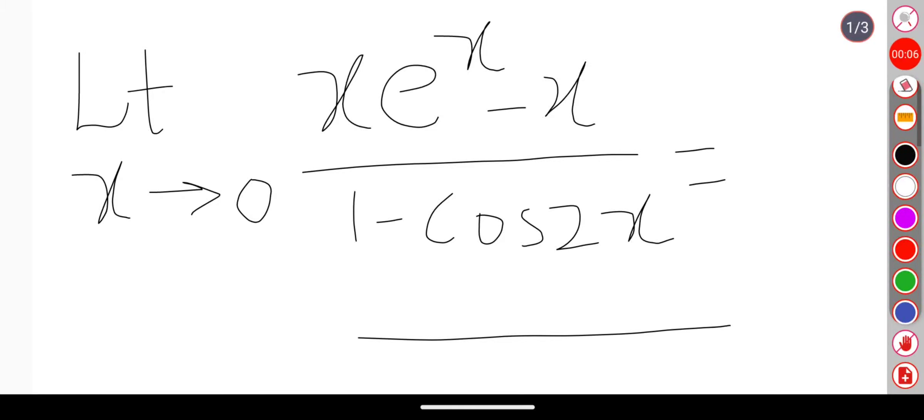Let's see the question. The question says limit x tends to 0, x e to the power x minus x by 1 minus cos 2x equals dash.